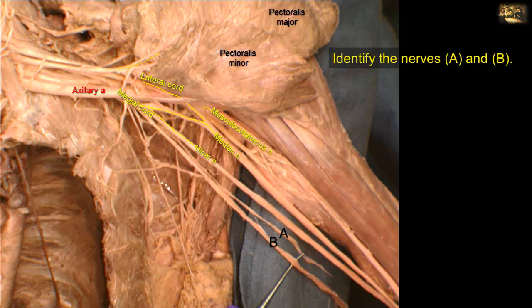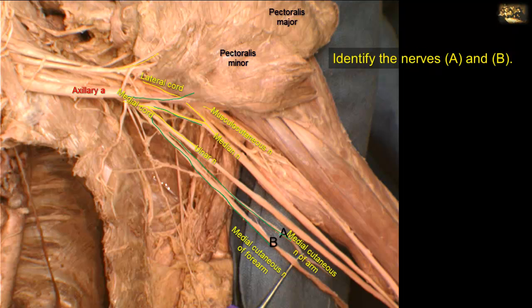The medial cord has five branches. The ulnar nerve is one terminal branch; the other four are all medial: the medial pectoral nerve, which passes through pectoralis minor; the medial root of the median nerve; the medial cutaneous nerve of the forearm; and the medial cutaneous nerve of the arm. These two nerves are cutaneous, meaning sensory to the skin. The smaller one is the medial cutaneous nerve of the arm, shown here detached because it supplies the skin of the arm which has been removed. The larger, more medial one is the medial cutaneous nerve of the forearm, which supplies the medial side of the forearm.